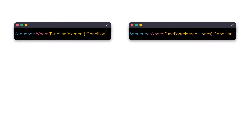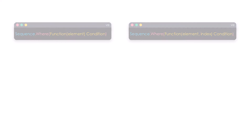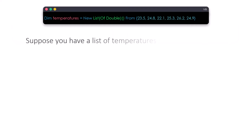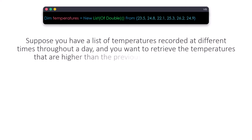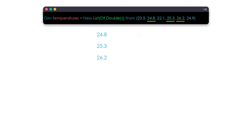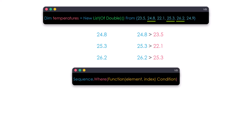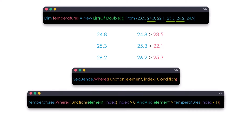Let's now check the following real example using the WHERE method. Suppose you have a list of temperatures recorded at different times throughout a day, and you want to retrieve the temperatures that are higher than the previous temperature in the list. In this case I should get three values as output, because each one of them is greater than the previous one. Since we want to compare values with their previous values using the index, we have to use the second overload of the WHERE method.